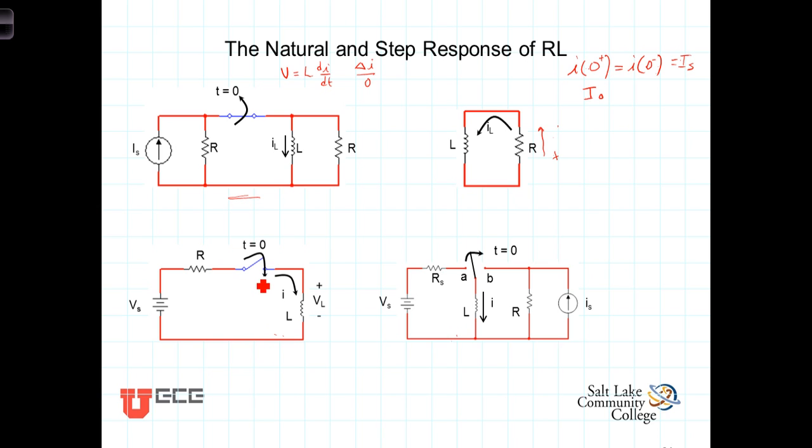So, for example, here we have a circuit that, for T less than zero, the switch was open. We have a voltage source and the voltage source connected to the resistor, but was open circuit. At T equals zero, the switch closes.